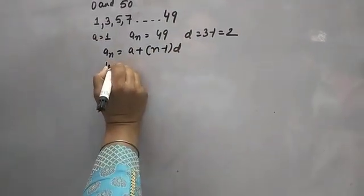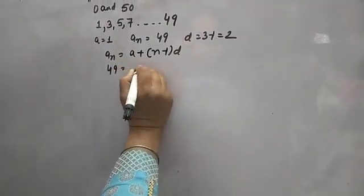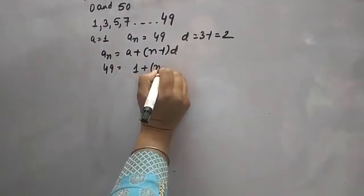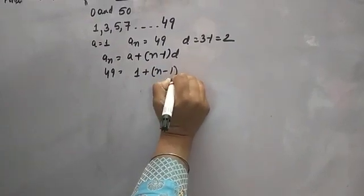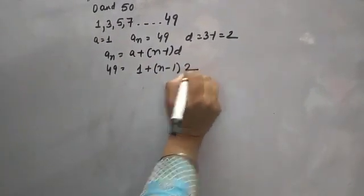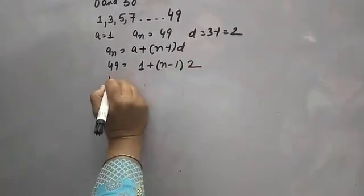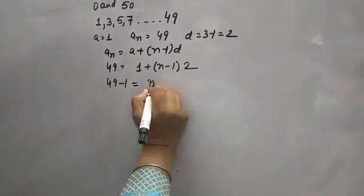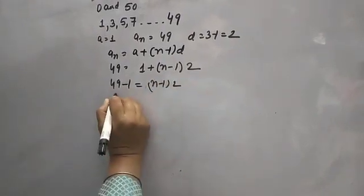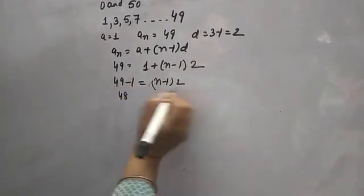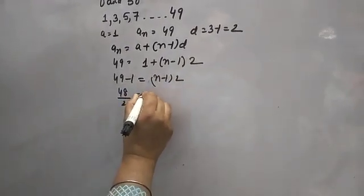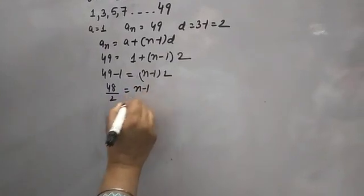Here the last term is 49 and a is 1, d is 2. So: 49 = 1 + (N minus 1) into 2. That gives 49 minus 1 = (N minus 1) into 2, so 48 = (N minus 1) into 2. Dividing both sides by 2 gives N minus 1 = 24.